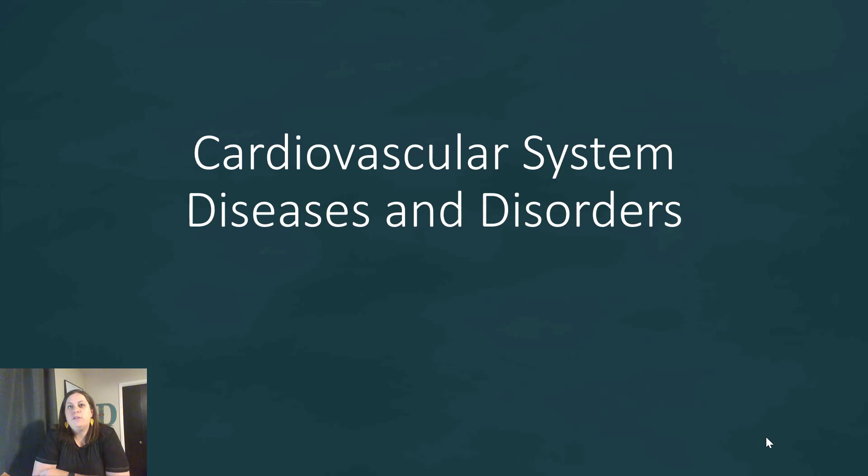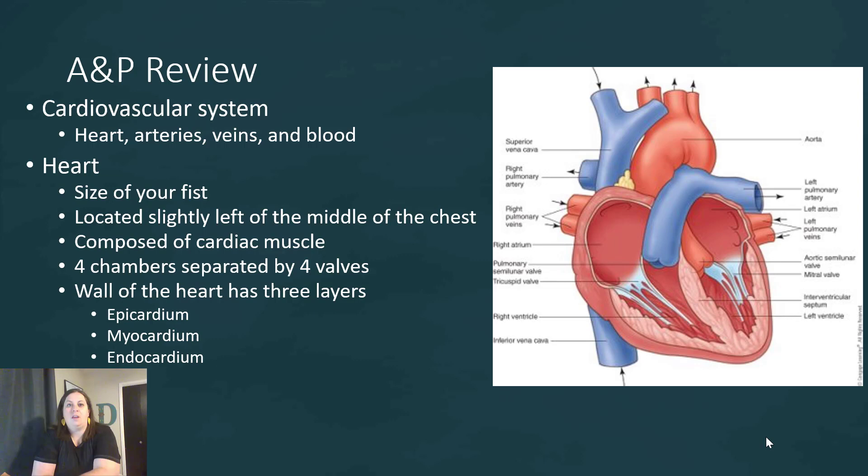We're going to be looking at the cardiovascular system. We're going to do a little review over the structures of this system and then get into some of the diseases and disorders. Remember that the cardiovascular system contains the heart, the blood vessels — which include the arteries and the veins — and blood. Those are the components.